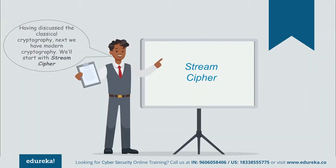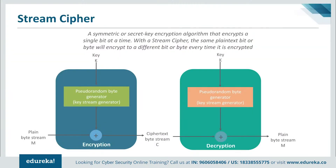A stream cipher is a method of encrypting text in which a cryptographic key and algorithm are applied to each binary digit in a data stream one bit at a time. This method is not much used in modern cryptography. The main alternative is the block cipher, in which a key and algorithm are applied to a block of data rather than individual bits.